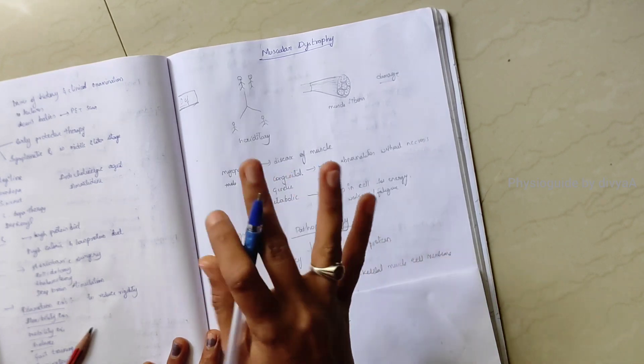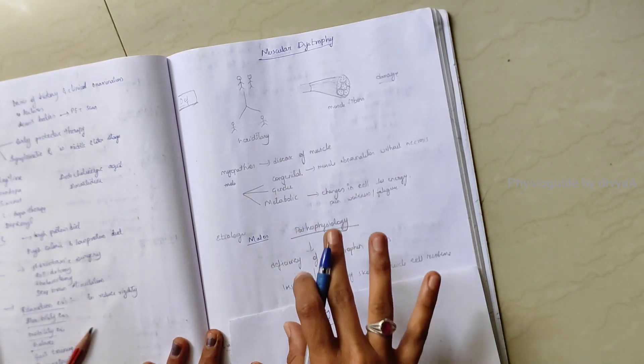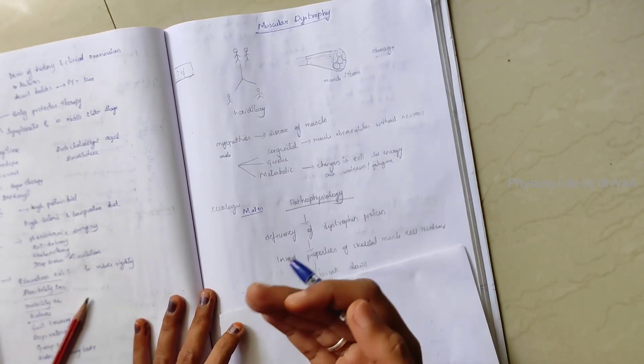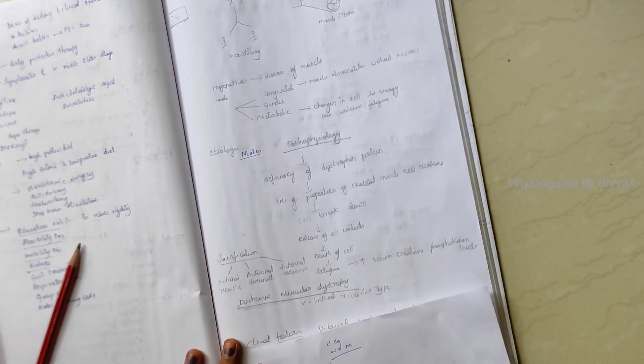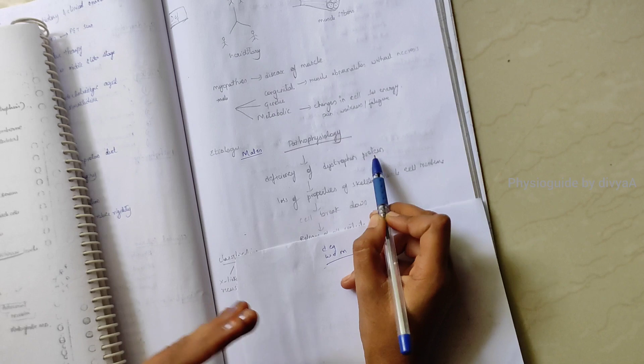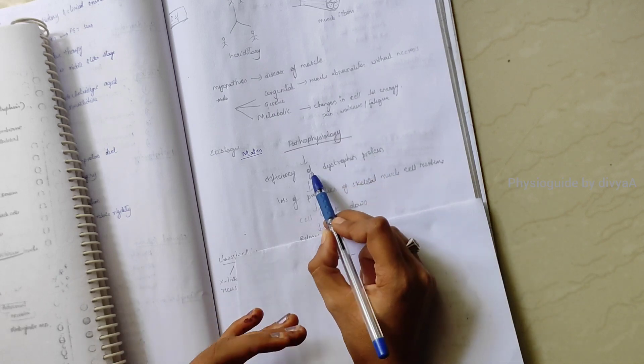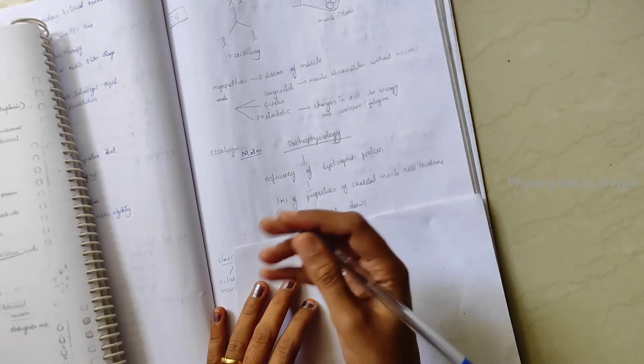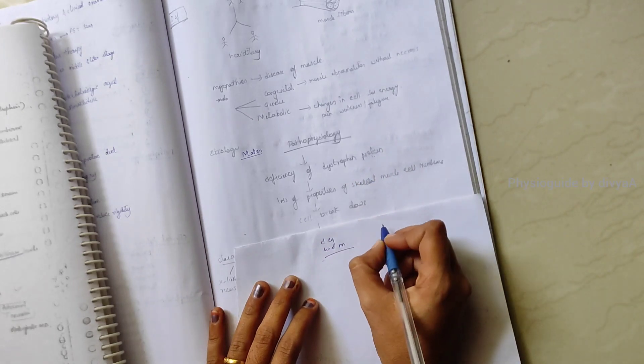Pathophysiology - how the disease progresses step by step. Firstly, if there is deficiency of the dystrophin protein, this process starts here. Deficiency of dystrophin protein - why this deficiency occurs? Due to defect in the gene.